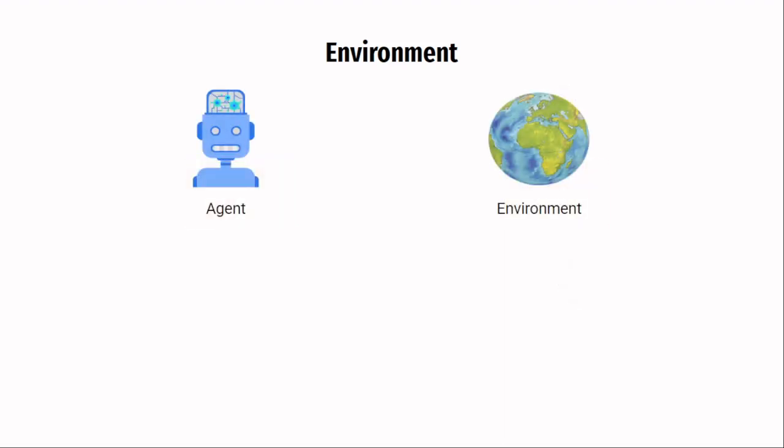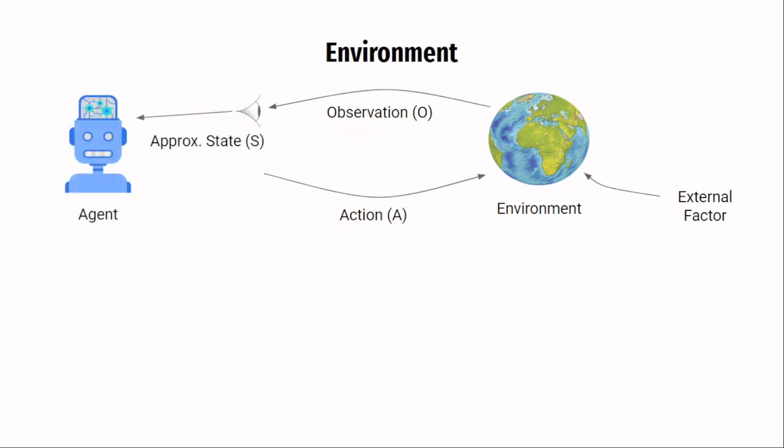Understand that the environment has an internal state according to which it functions. Every time an action is taken, the internal state modifies and therefore produces a different observation. It is not necessary that only the actions taken by the agent modifies the state, it can be some other external factor that changes it. The point is, the internal state of the environment is not visible to the agent. The agent has to make out the state from the observation itself.